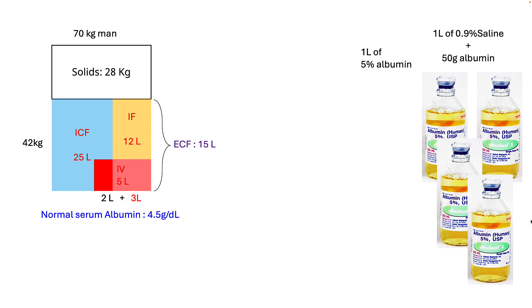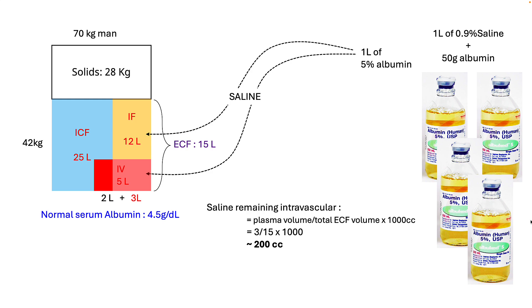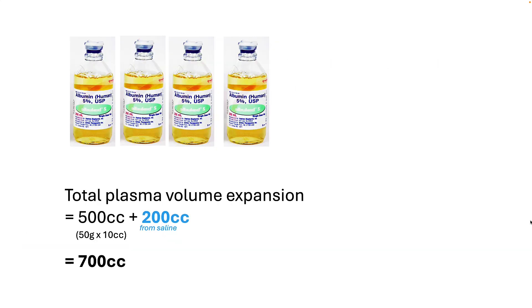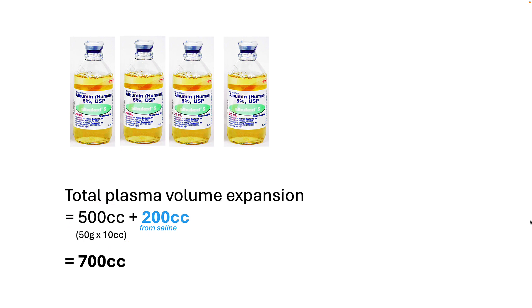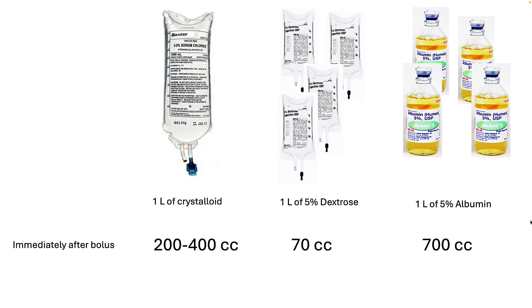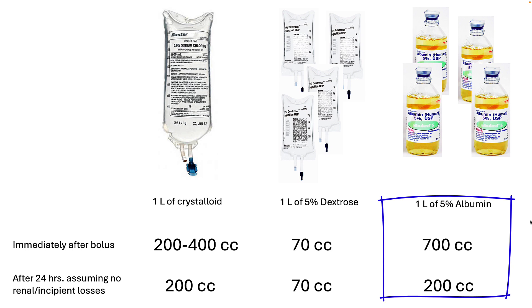Let's look at 5% albumin. A liter of 5% albumin actually has 50 grams of albumin in 1 liter of normal saline. Of that 1 liter of normal saline, only 200 cc's will remain intravascular. As for the albumin, 1 gram of albumin holds on to about 10 mL of water, so 50 grams draws in 500 cc's. Total plasma volume expansion will be 200 cc's from the saline plus 500 cc's from the albumin, giving 700 cc's total. Note that with time, albumin equilibrates between the intravascular space and interstitium, and in the end only 200 cc's will remain intravascular after many hours. This slide gives you an estimate of intravascular volume increase with these three commonly used fluids.